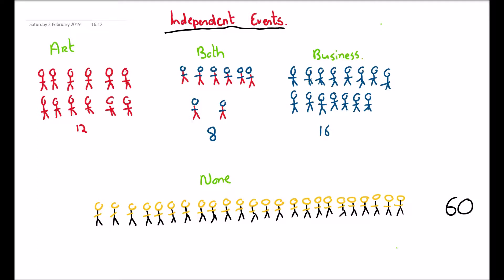To teach you what an independent event is, we're going to look at this classroom — a second year class in a school. In this second year class, art and business are not compulsory; you can do them if you want. We have 60 students in the group. What I want to do is find out the probability, if I picked a student at random, of picking a student that studies business. We have 16 students who study business and 8 students who study both, so that's 24 students out of 60 who study business, which simplifies to 2 over 5.